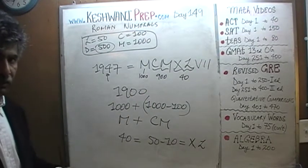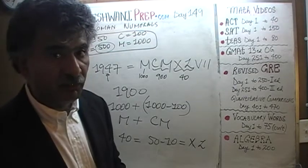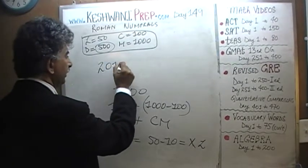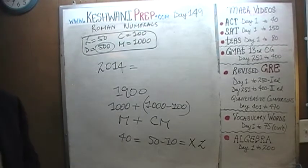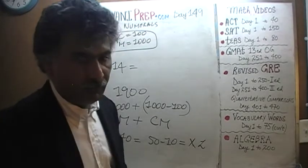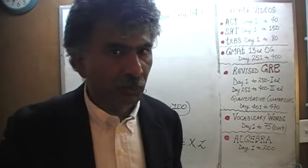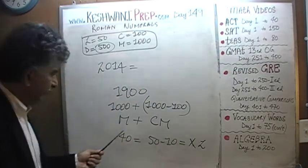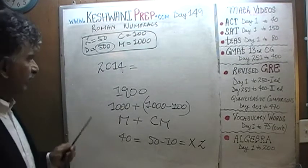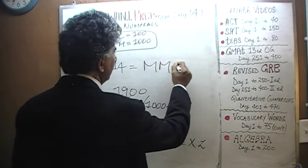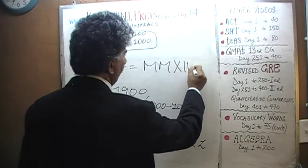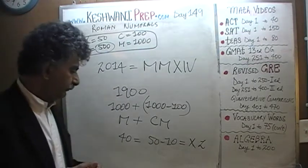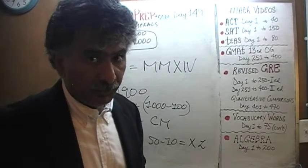This year, as I speak, the year is 2014. How do we write 2014? Actually, it's very simple. 2000 is MM — a thousand plus a thousand. Then 14 is 10 and 4, which is XIV. Up until 14 years ago, writing years in Roman numerals was quite cumbersome because of 1900-something. But 2014 is simply MMXIV. Tomorrow we'll do some more exercises. I'll see you tomorrow. Bye now.